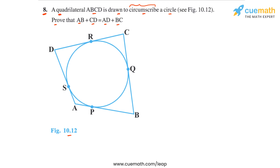The logic to solve this problem is actually very simple. It is based on the fact that the two tangents drawn from any external point to a circle will have the same length.